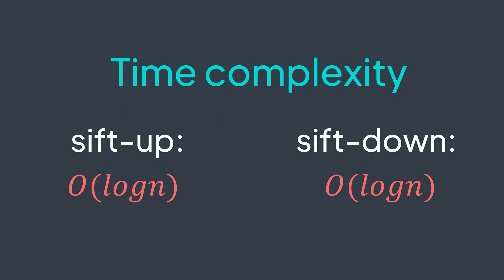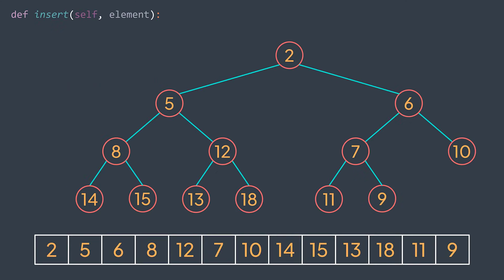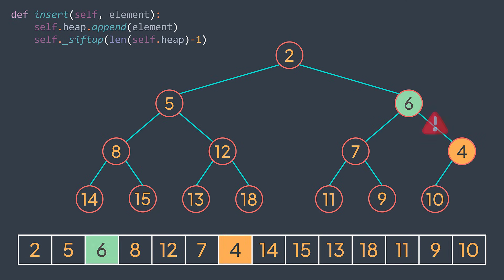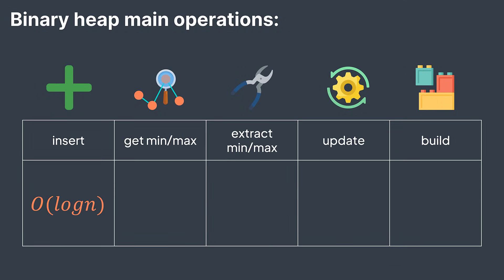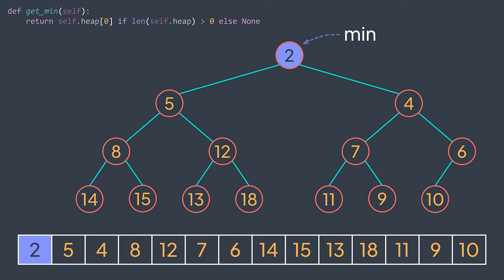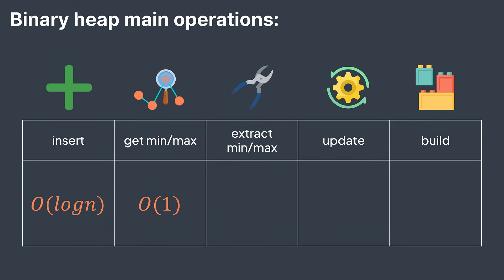We know how to sift up and sift down, but why do we need these operations? We need them to insert, update, and delete elements. To insert an element in a heap, we just append the value at the end of the array, but it may break the heap property, so we apply sift up on it to take it to the right place — sift up because it starts at the bottom. This operation has an O(log n) time complexity. The second operation is get min: in a min heap, the smallest element is always the root, which is the element at index zero in the array, so we just return heap[0] if it exists. This is O(1) because we already know the index.